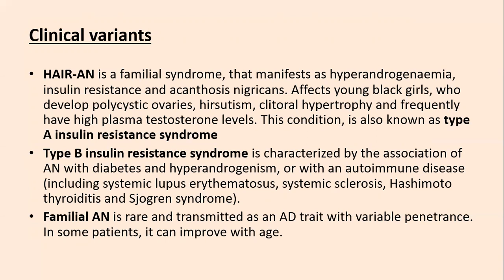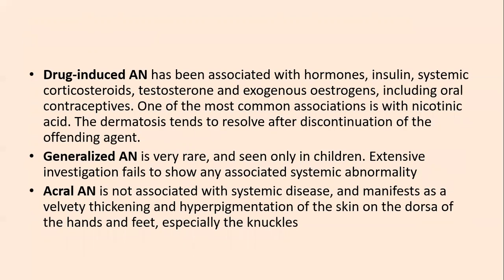Clinical variants include HAIR-AN syndrome — a familial syndrome manifesting as hyperandrogenemia, insulin resistance, and acanthosis nigricans — mainly affecting young Black girls who develop polycystic ovaries, hirsutism, clitoral hypertrophy, and elevated plasma testosterone. This is also called type A insulin resistance syndrome. Type B insulin resistance syndrome is characterized by acanthosis nigricans with diabetes and hyperandrogenism, or with autoimmune diseases like SLE, systemic sclerosis, Hashimoto thyroiditis, and Sjögren's syndrome. Familial acanthosis nigricans is rare, transmitted as autosomal dominant with variable penetrance, and can improve with age. Drug-induced acanthosis nigricans is associated with hormones, insulin, systemic corticosteroids, testosterone, exogenous estrogen including oral contraceptives, and nicotinic acid; it tends to resolve after discontinuation.